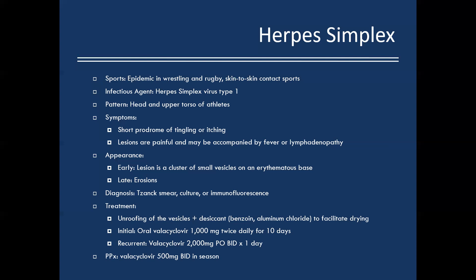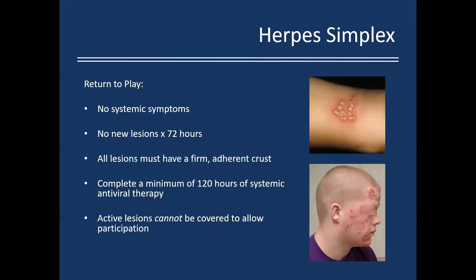The one-day BID dosing is my go-to for recurrent cases. For prophylaxis — say you're a rugby player or wrestler with known herpes simplex outbreaks every season — put them on 500 mg valacyclovir BID for the duration of their season. Return to play requires: no systemic symptoms, no new lesions for 72 hours, all lesions with a firm adherent crust, and a minimum of 120 hours of systemic antiviral therapy.